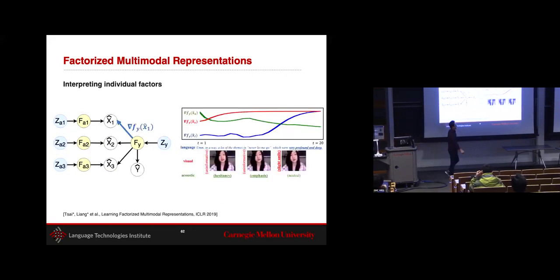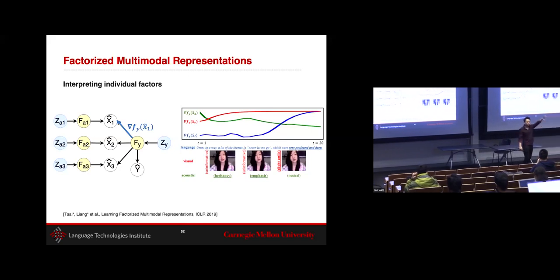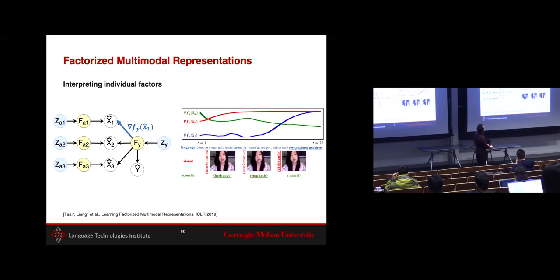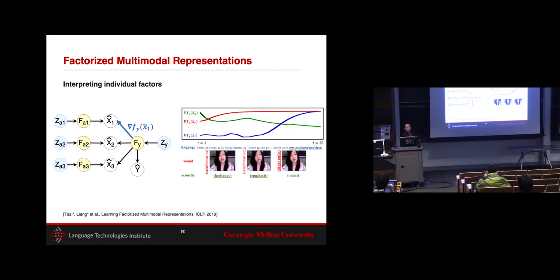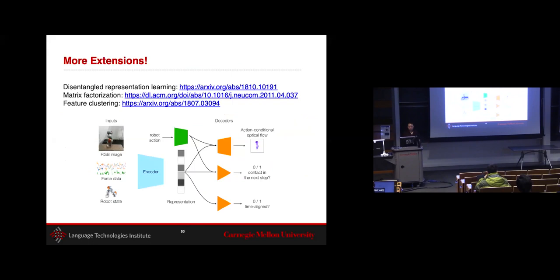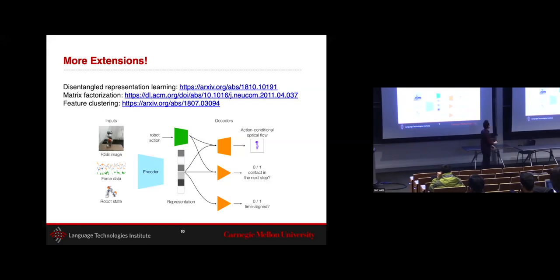Another benefit of factorized representations is interpretability: you can analyze the gradient of language-only factors contributing toward a sentiment label, revealing when language was influential. For example, when a speaker says 'very profound and deep,' the gradient of the language factor suddenly increases, showing language is important at that moment. Breaking down factors also enables applications like matrix factorization and feature clustering. Related follow-up work at Stanford applied similar decompositions to robotics.